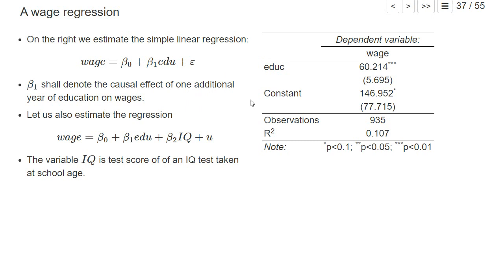Let's look at a simple linear regression first where we just regress the monthly wages on the years of education. The result is shown here on the right and we find a positive coefficient in front of education.